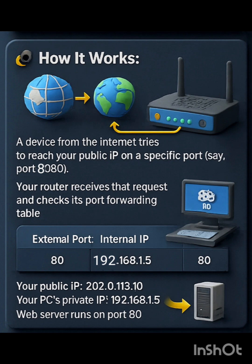Example: you are hosting a web server on your PC at home, and your public IP is 203.0.113.10 and your PC's private IP address is 192.168.1.5. The web server runs on port 80.